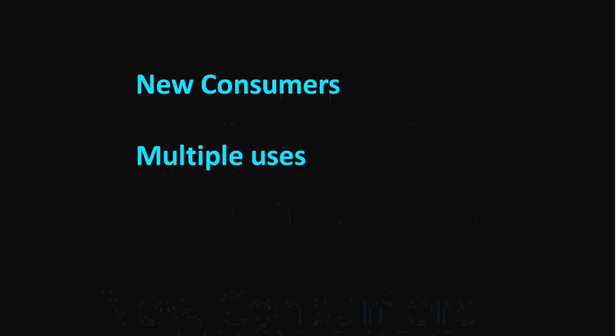Multiple uses: when the price of a product is very high, people will buy and put it to the most important uses. When the price of the product falls, they will start buying the product in large quantities and start putting it to less important uses also. This makes the product to be demanded in large quantities when its price falls.